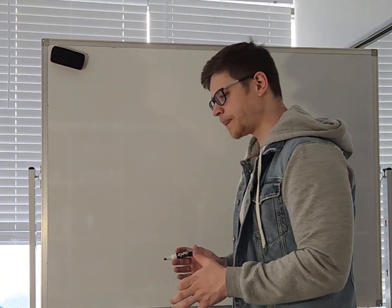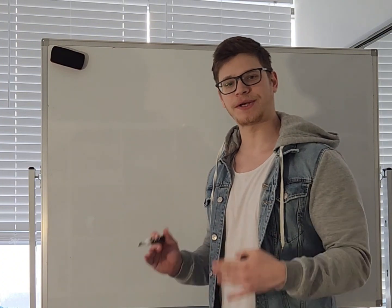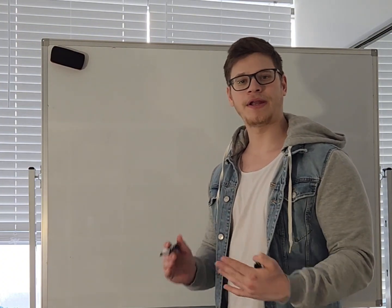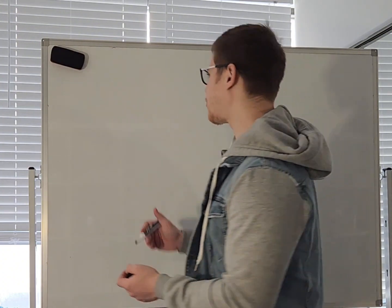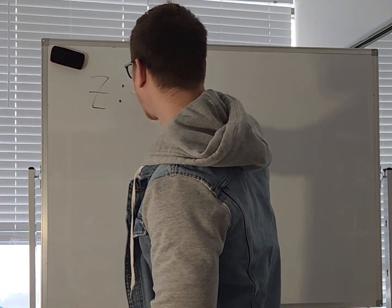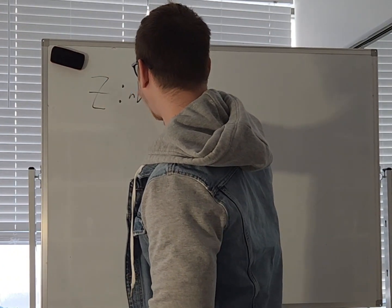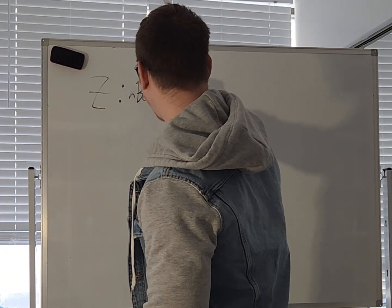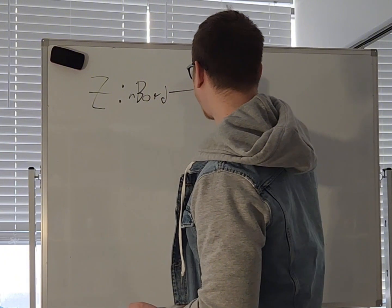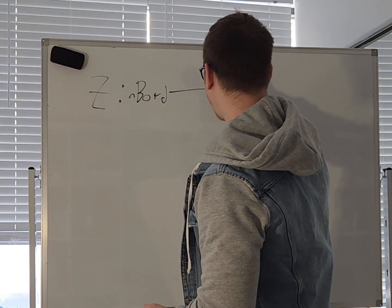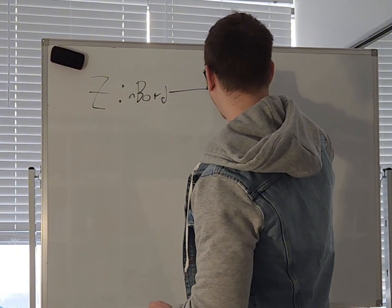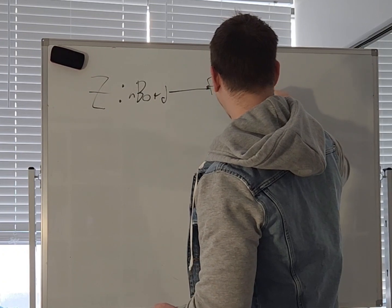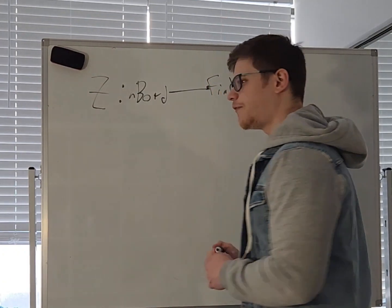So TQFTs — I'm going to give the very abstract categorical definition first, and then the physical interpretation as I understand it. A TQFT is a symmetric monoidal functor from the category of N-cobordisms into finite-dimensional vector spaces over some field K.